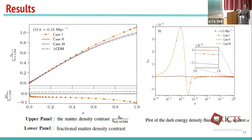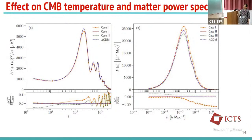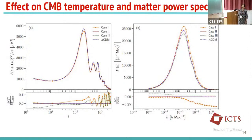For the dark energy sector, initially there are fluctuations for all parameter values, which then settle. Examining the CMB temperature and matter power spectra, we find some features at lower multipoles. We know that in the Planck temperature spectrum at lower multipoles there are additional features that the Lambda CDM model cannot explain. This type of interacting model may explain those small bumps at lower multipoles, showing additional features compared to Lambda CDM, and demonstrating that interacting models significantly affect the growth of matter perturbations.